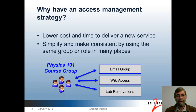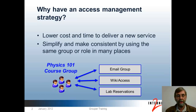Secondly, you can simplify things for users and for people that manage their access, and make things more consistent across services by using the same group or the same rule in many places. For example, pictured here, you can imagine the students and instructors in a given course group all being provided access to email, a wiki site, and a lab reservation system. You have one list used in three places.